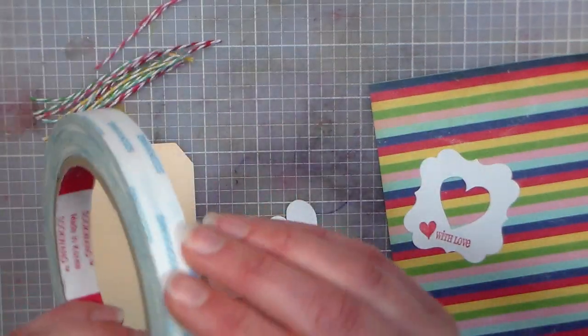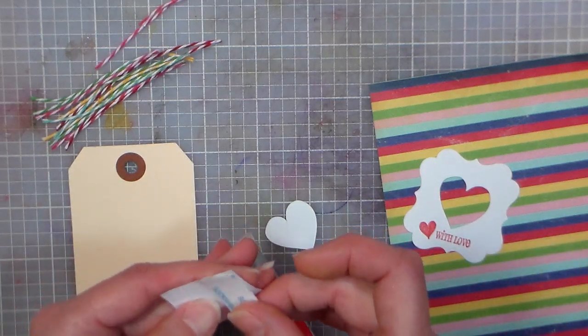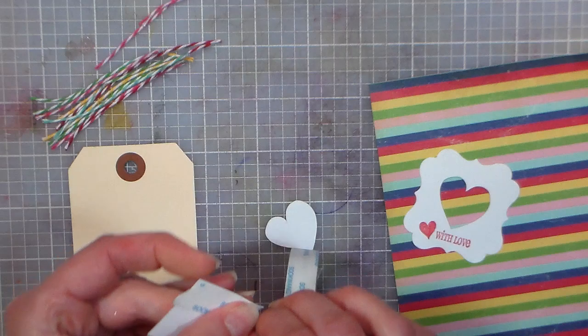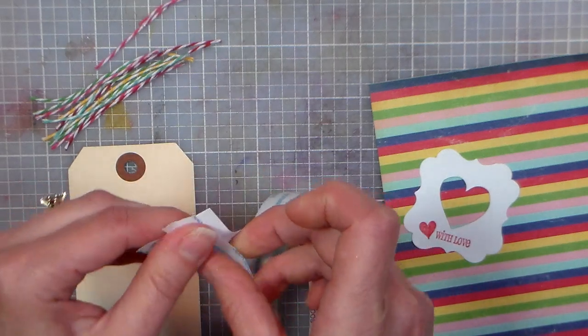I'm using score tape here, but you could use any double-sided tape. I would recommend a dry adhesive over glue because it's easier to deal with. If you have sheets of adhesive, that's even better.